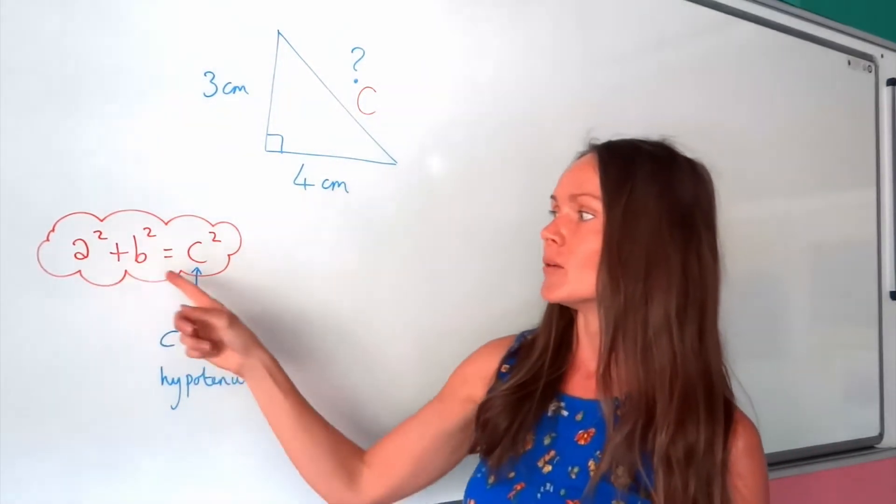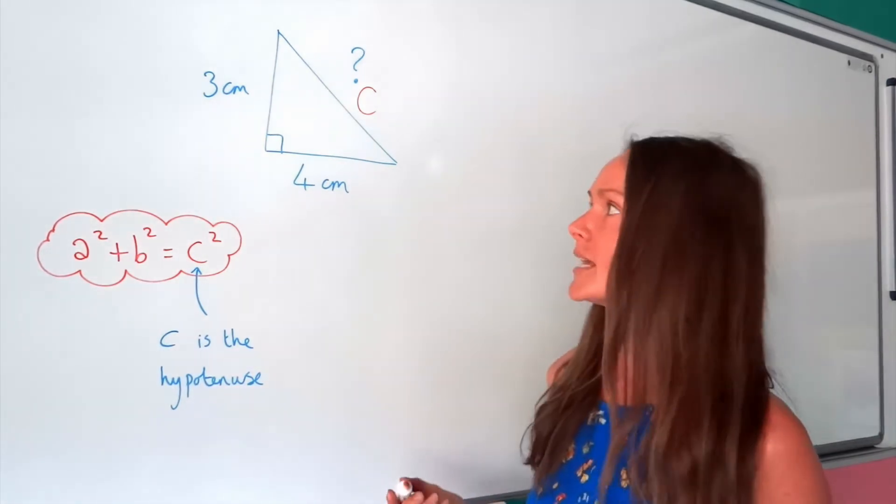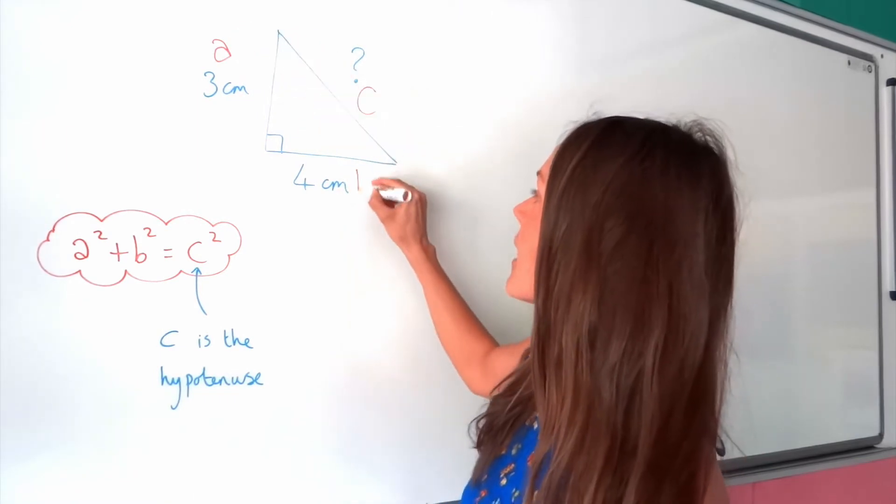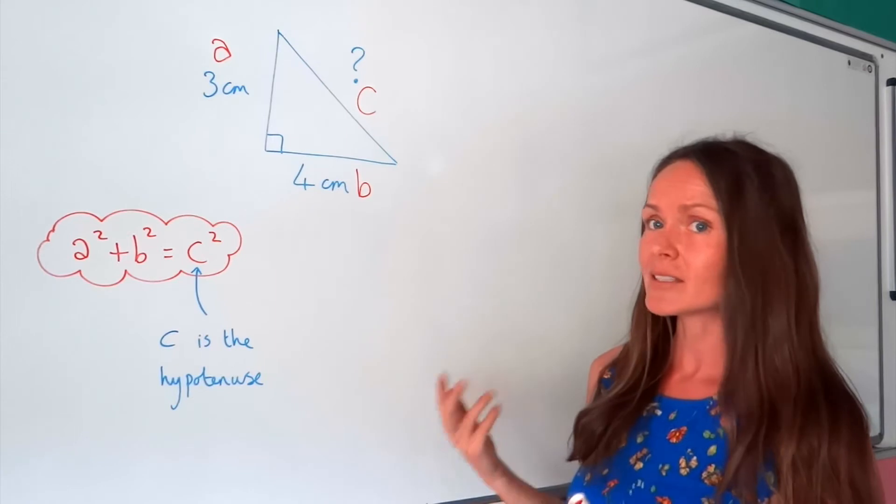Now the other two sides, a and b, we call these the shorter sides. It doesn't matter which way around you label those. So I'm just going to call that one a and that one b there. So now that I've done my labelling, that's the important part.